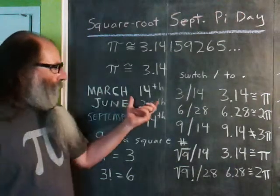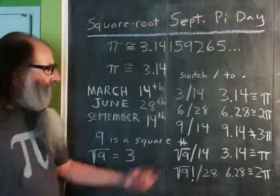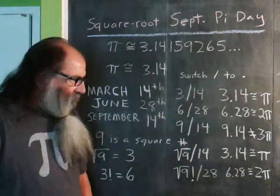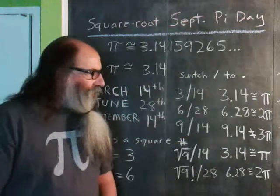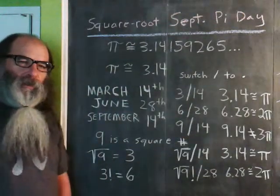And then, on June 28th, the date is 6/28. If you switch the slash to a dot, you get 6.28, which is 2 pi.